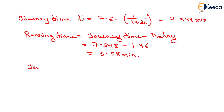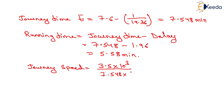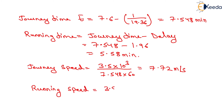Now we have to determine journey speed and running speed. Journey speed equals length of travel, 3.5 km, converted to meters, divided by journey time of 7.548 into 60 seconds, giving 7.72 meters per second. Similarly, running speed equals 3.5 into 10 to the power 3, divided by running time of 5.58 into 60, giving 10.45 meters per second.